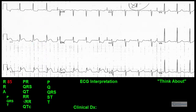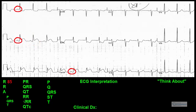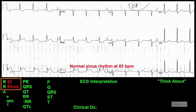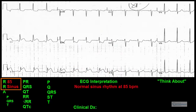Rhythm: There are regular P waves that are followed by QRS complexes. The P waves are upright in leads 1, 2, and AVF, and inverted in lead AVR, suggesting a sinus rhythm. Since the rate is between 60 and 100 beats per minute, we can list normal sinus rhythm in the ECG diagnosis section.